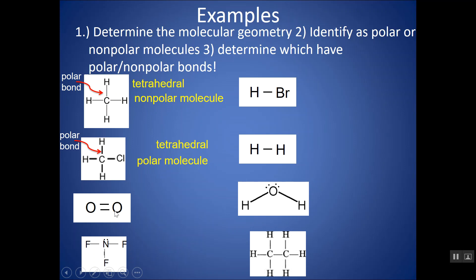Here's another one. This doesn't really have a central atom, but there's only two atoms present. Whenever there's just two atoms, it has to be linear. This would be a symmetrical structure — it's two O's on either side — so this is a non-polar molecule. This would also be a non-polar bond between two non-metals that have the same electronegativity, so the difference would be zero.